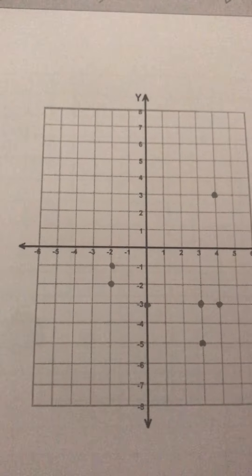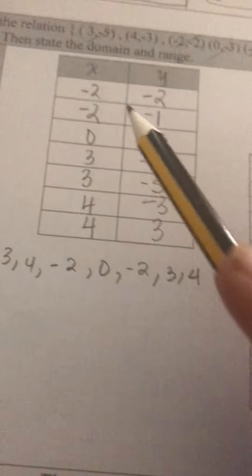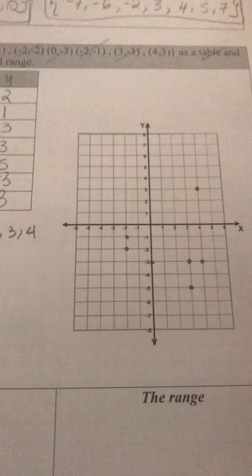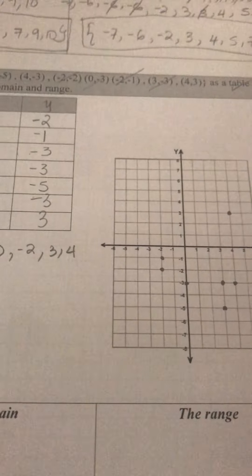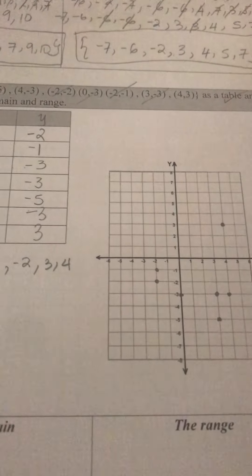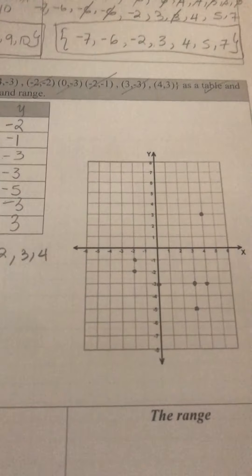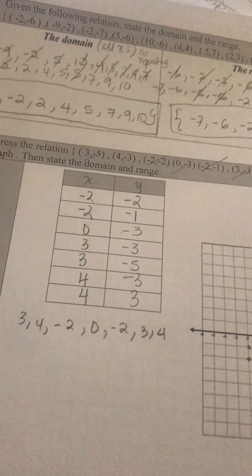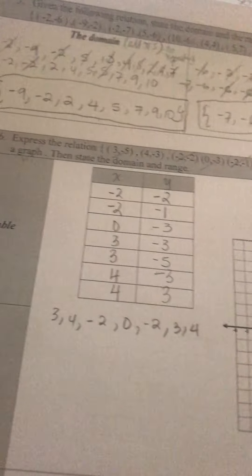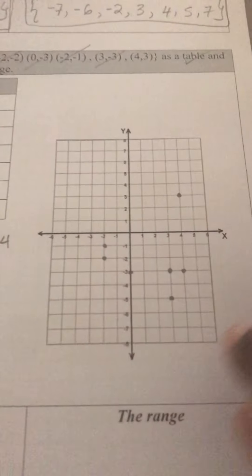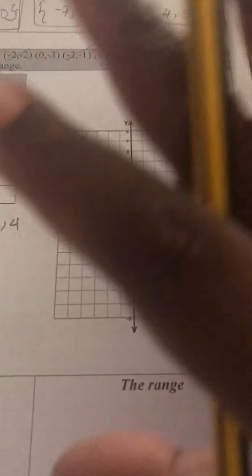You plot whatever you have on your table — that's it. They didn't tell you to make a line, they didn't tell you to join the points. It says plot the graph, and there you have plotted, and that's your answer.